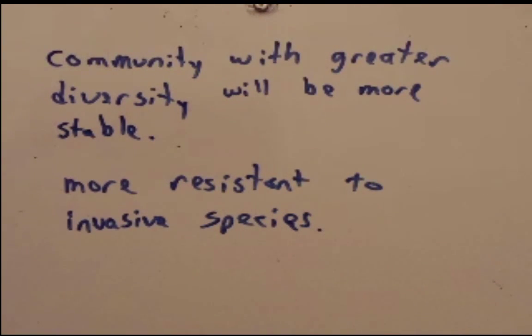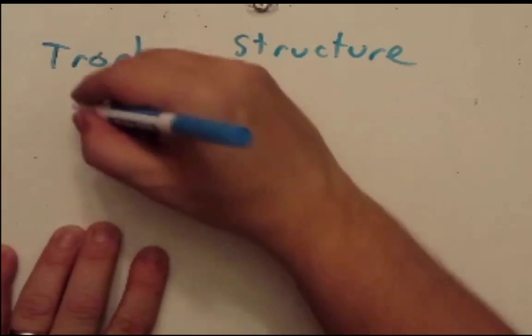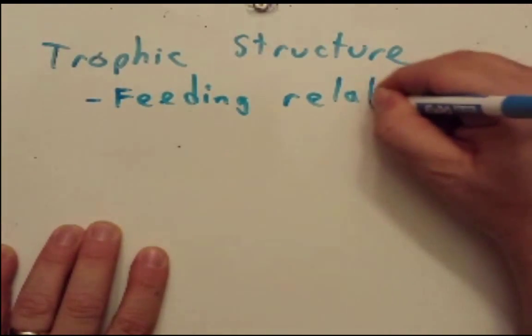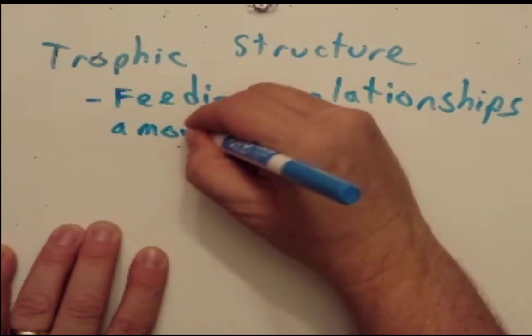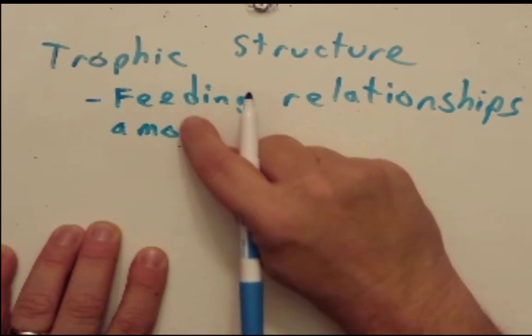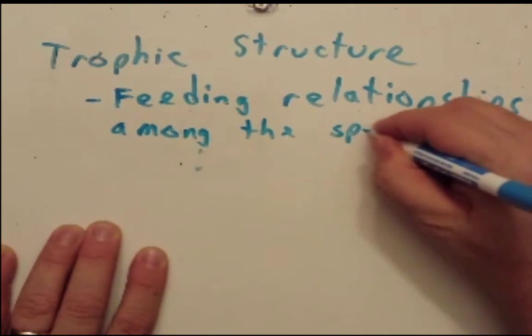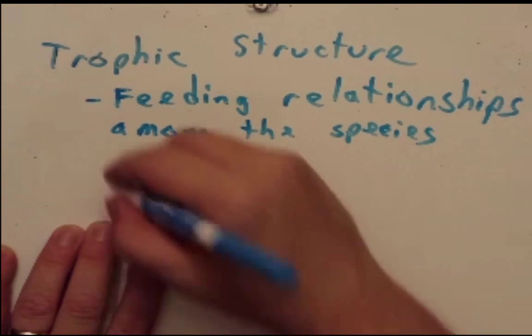In general, diversity matters — more diversity is better for the community. As we think about diversity and why it matters, let's introduce the topic of trophic structure, which we can define simply as the feeding relationships among the species within a community.